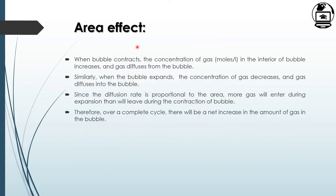The area effect refers to the following: when the bubble contracts, the concentration of gas increases and gas diffuses from outside into the bubble. When the bubble expands, the gas concentration decreases and gas diffuses from inside the bubble outward. The diffusion rate is proportional to area, so more gas enters during expansion than leaves during contraction. Therefore, over a complete cycle, there is a net increase in the amount of gas in the bubble.